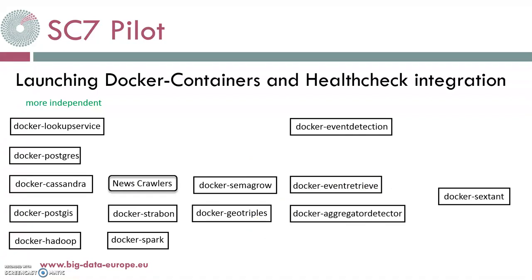Having all of this in mind, we can create the docker-compose.yml file with healthchecks added for all Docker containers, so that it can start all the containers of the SC7 pilot safely and in the right sequence. By using healthchecks, we can define both the launching sequence and be sure that before launching a certain container, all the ones that provide its backend are not only up and running, but also healthy. Also, if something goes wrong, we can see which of the containers causes trouble.